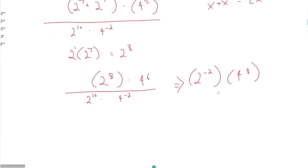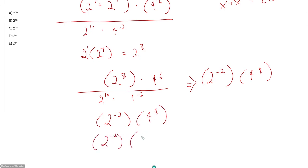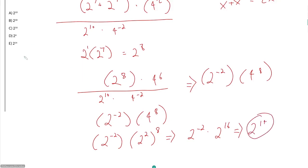Now we need to combine our 2s and 4s into a single base. We convert 4 to the 8th into base 2: 4 to the 8th equals (2 squared) to the 8th. Multiplying the powers gives 2 to the 16th. Multiplying exponents with the same base means adding the powers: 2 to the negative 2nd times 2 to the 16th gives 2 to the 14th, which is answer choice E.